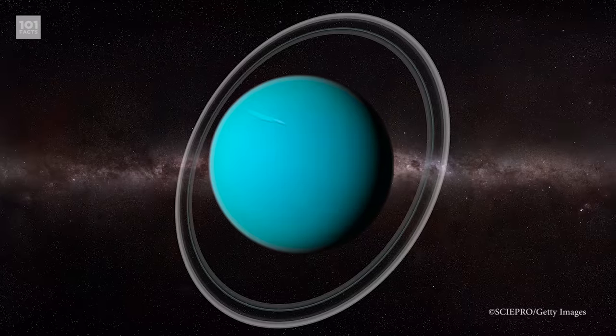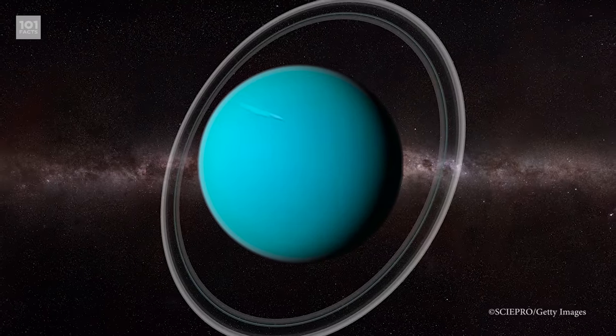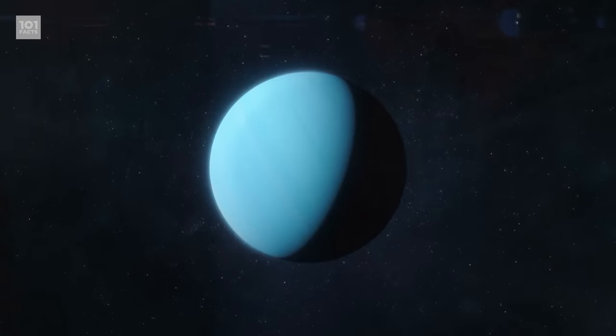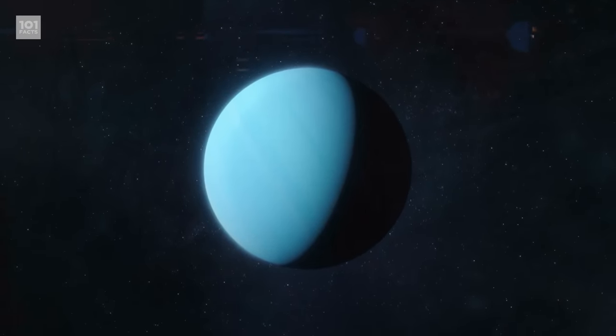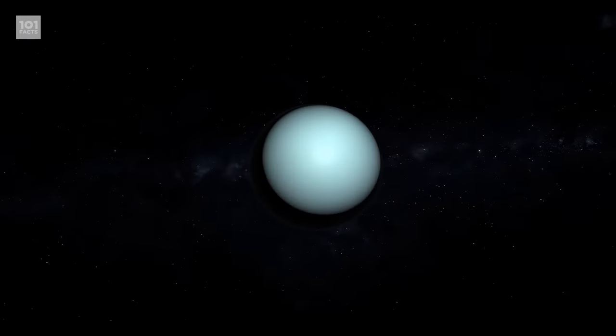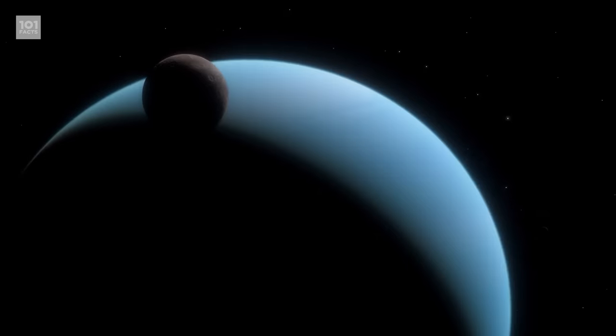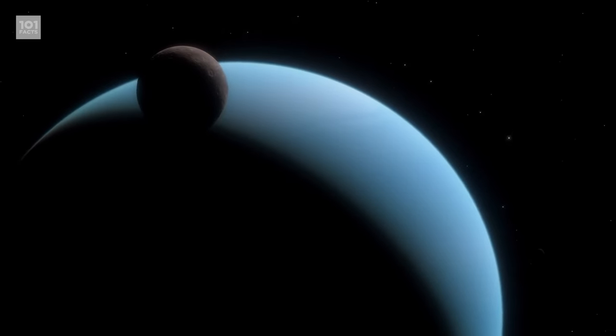Uranus has the coldest atmosphere of any planet in the solar system, despite not being the furthest away from the sun. This is because, unlike Neptune, Uranus doesn't have any internal heat within the surface of the planet. It also doesn't really have what qualifies as a true surface. This is because the planet is mostly just a ball of swirling fluids.